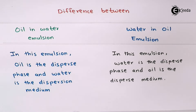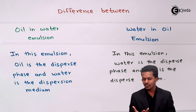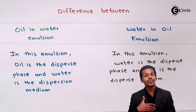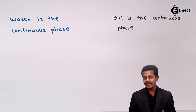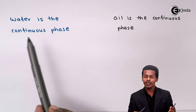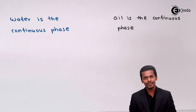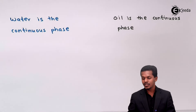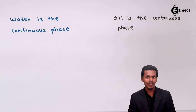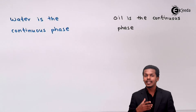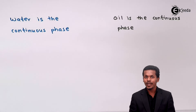We studied this in our previous lecture, but there are also further differences. The second difference is that water is the continuous phase in an oil-in-water emulsion, whereas in a water-in-oil emulsion, oil is the continuous phase.